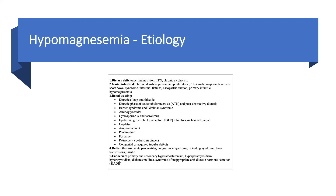Redistribution causes include refeeding, blood transfusion, insulin — which drives magnesium and potassium into cells — acute pancreatitis, and hungry bone syndrome. Endocrine causes are less common and include primary and secondary hyperaldosteronism, hyperparathyroidism, hyperthyroidism, diabetes, and syndrome of inappropriate antidiuretic hormone secretion. With electrolytes, it's important to memorize the common causes — malnutrition, TPN, alcoholism, diarrhea, PPIs, laxatives, diuretics, and hungry bone syndrome — and use references for less common ones.